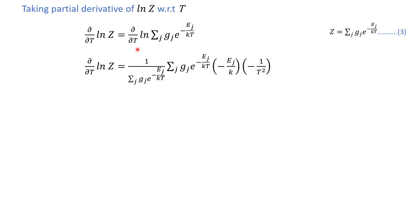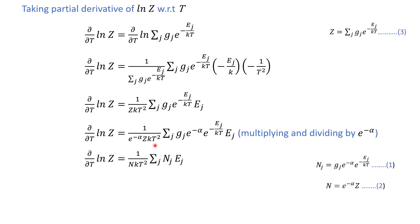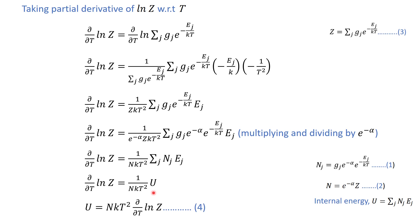Applying the partial derivative with respect to T on the right-hand side, from equation number two this is Z, and 1/k and 1/T² are independent of j, so we can take them out of the summation sign. Now if we multiply and divide the right-hand side by e to the power minus alpha, we get a relation, and from equations one and two we write this as nj·ej, and e to the power minus alpha times Z equals N. The summation of nj·ej is equal to U, the internal energy or total energy of the system.